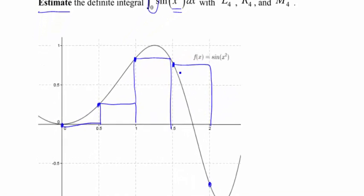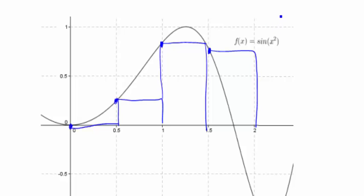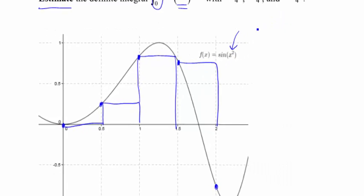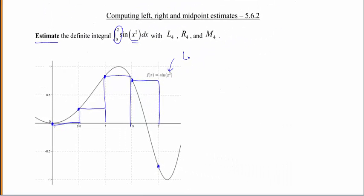Now I could just eyeball these, but we actually have a function. So we can use our endpoints here, plug them into this function, and actually get out a value. So L4, I need to do my delta x.